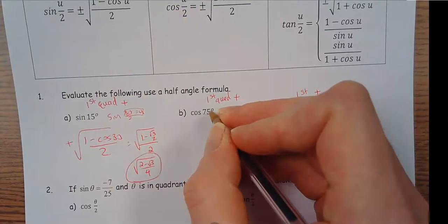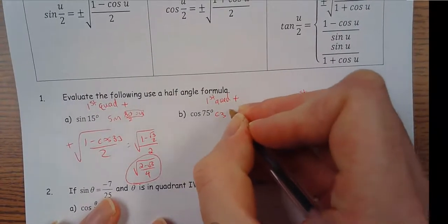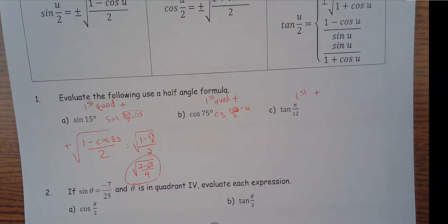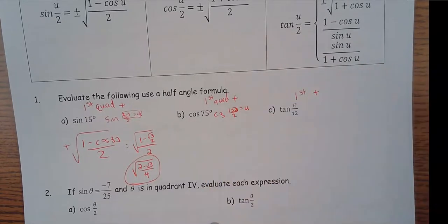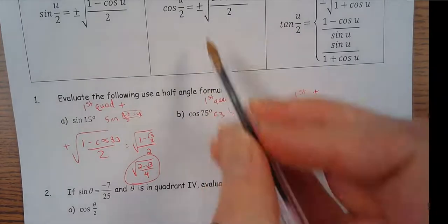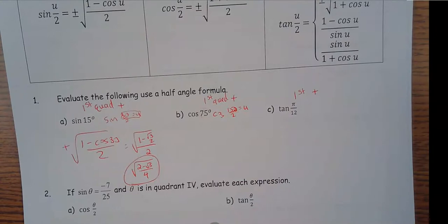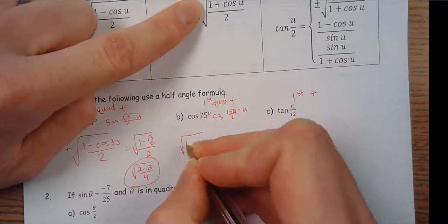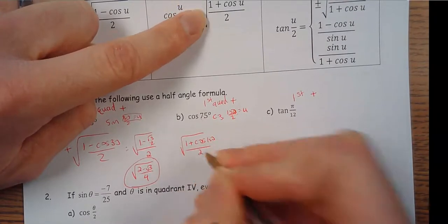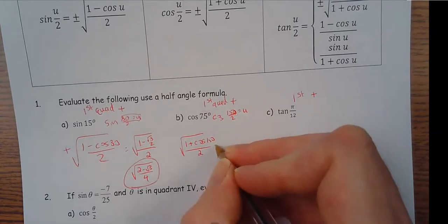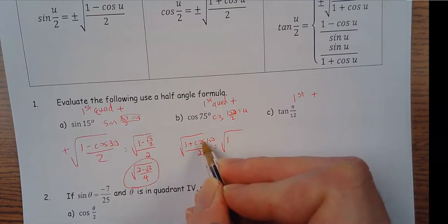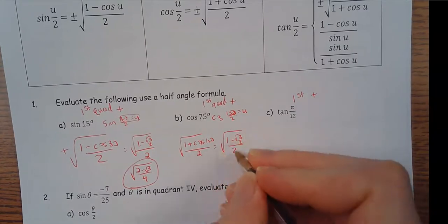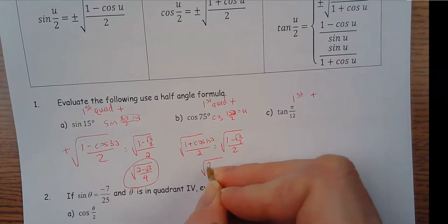Cosine 75: think of that as cosine(150/2), so u = 150. Why 150? It's 30 degrees less than 180, so the reference angle makes a triangle I don't need a calculator for. This is first quadrant, so I want the positive square root of (1 + cosine 150) / 2. Cosine of 150 is −√3/2, so doubling everything gives √((2 − √3) / 4).